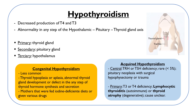Hypothyroidism can also be described as congenital or acquired, depending on the age at which it develops. Congenital hypothyroidism is less common and results from thyroid hypoplasia or aplasia, from abnormal thyroid gland development, or from a defect in the steps of thyroid hormone synthesis and suppression.